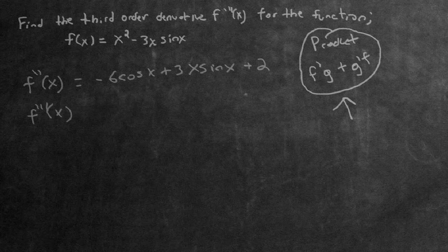Well, that's just going to be positive 6 sine x. Because the derivative of cosine is negative sine x, and the negative out front multiplied by the negative makes it positive. So we just have 6 sine x here.